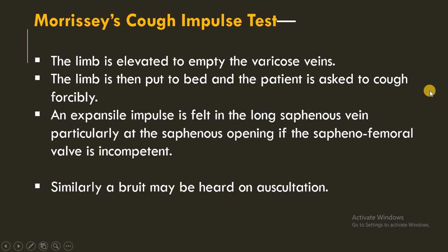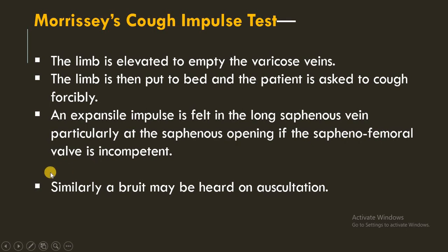Next is Morrissey's cuff impulse test. The limb is elevated to empty the varicose veins, then put down and the patient is asked to cough forcibly. An expansile impulse is felt in the long saphenous vein, particularly at the saphenous opening, if the sapheno-femoral valve is incompetent. Similarly, a bruit may be heard on auscultation. These are the clinical signs found in cases of varicose veins.